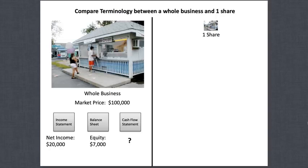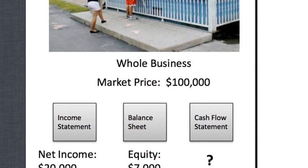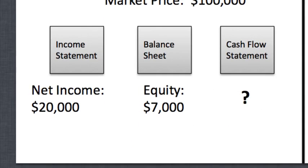Let's compare the terminology between a whole business and one share. If you haven't seen lessons two and three, I recommend going back to watch those. For the whole business, the market price is what Nancy's asking — $100,000. From the income statement, the bottom line is net income, and Nancy's net income was $20,000, representing her profit for the year.